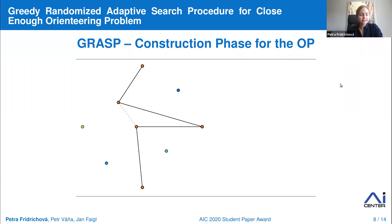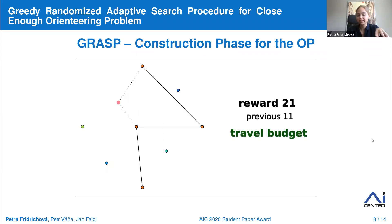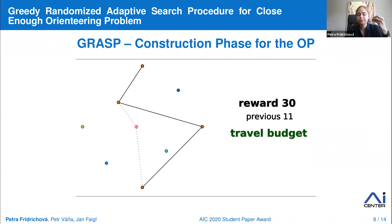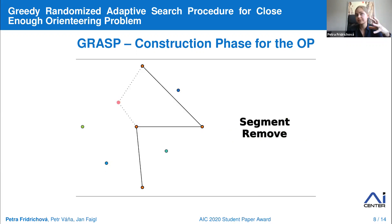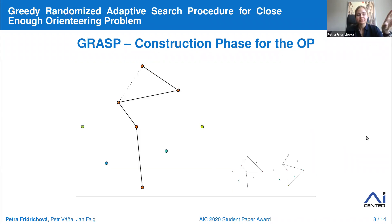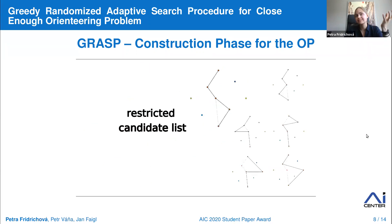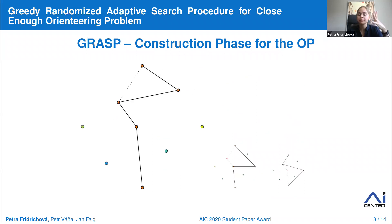When we add a new location and the travel budget is exceeded, the newly created path cannot be considered as a candidate. In such a case, we try to remove part of the path to test if the inserted location is more beneficial to the total reward — we call this method the segment remove. Paths with improved reward are included in the candidate list, and the construction phase terminates when the candidate list in one iteration is empty, meaning no better solution has been found.